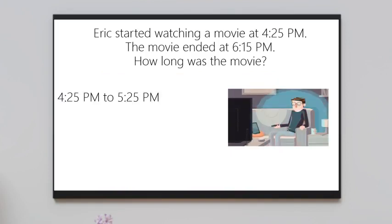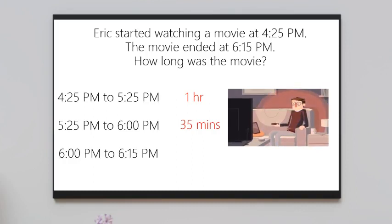From 4:25 to 5:25, that would be one hour. Then 5:25 to 6 o'clock, that would be 35 minutes. And then 6 o'clock to 6:15 is 15 more minutes. So we have one hour plus 25 minutes plus 15 minutes. We get one hour and 50 minutes.